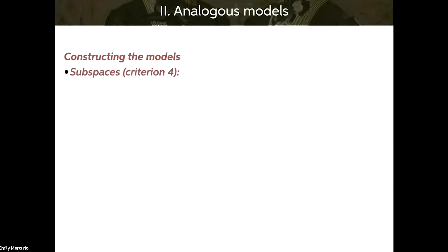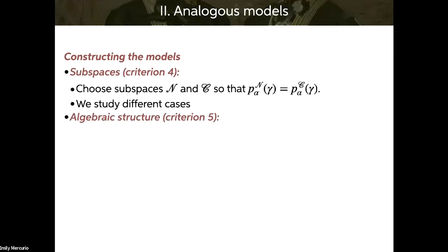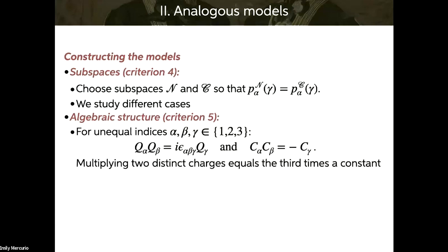For the fourth criterion — outcomes occurring with the same probabilities — I choose subspaces N and C such that this is the case, giving us lots of examples with different subspaces. For the last criterion on algebraic structures: for unequal indices, a product of any two charges equals the third times a constant, which is true in both cases. The difference is what that constant is. In the non-commuting case, the constant has a Levi-Civita symbol in it, so the order of operations matters. In the commuting one, it doesn't. This was the minimal change we could find to introduce non-commutation — the insertion of the Levi-Civita symbol. For equal indices, a product of two of them equals the identity.